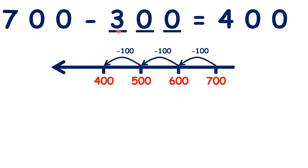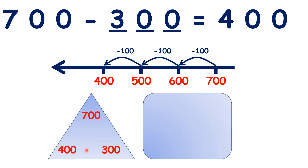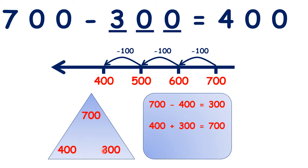Remember number family triangles? We can have 700 at the top and 400 and 300 at the bottom, because when you subtract one of the bottom numbers from the top number you get the other bottom number — and that's what we've done here. From this we also know three other related facts: 700 minus 400 equals 300, 300 plus 400 is 700, and 400 plus 300 is 700, because with addition order doesn't matter.